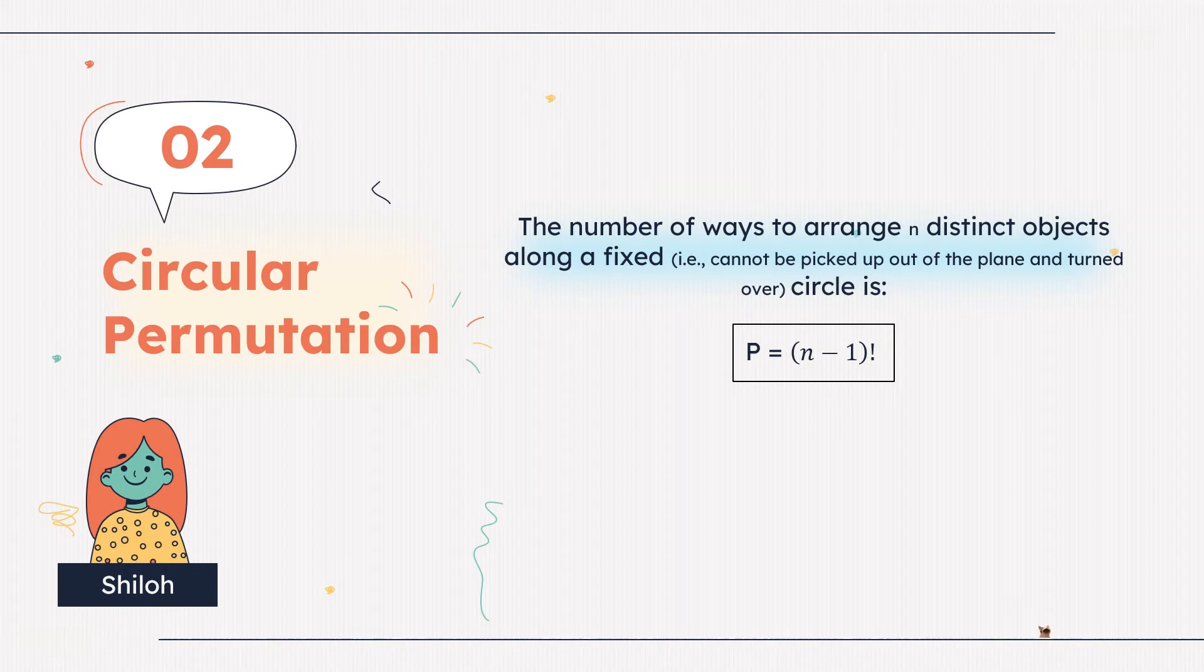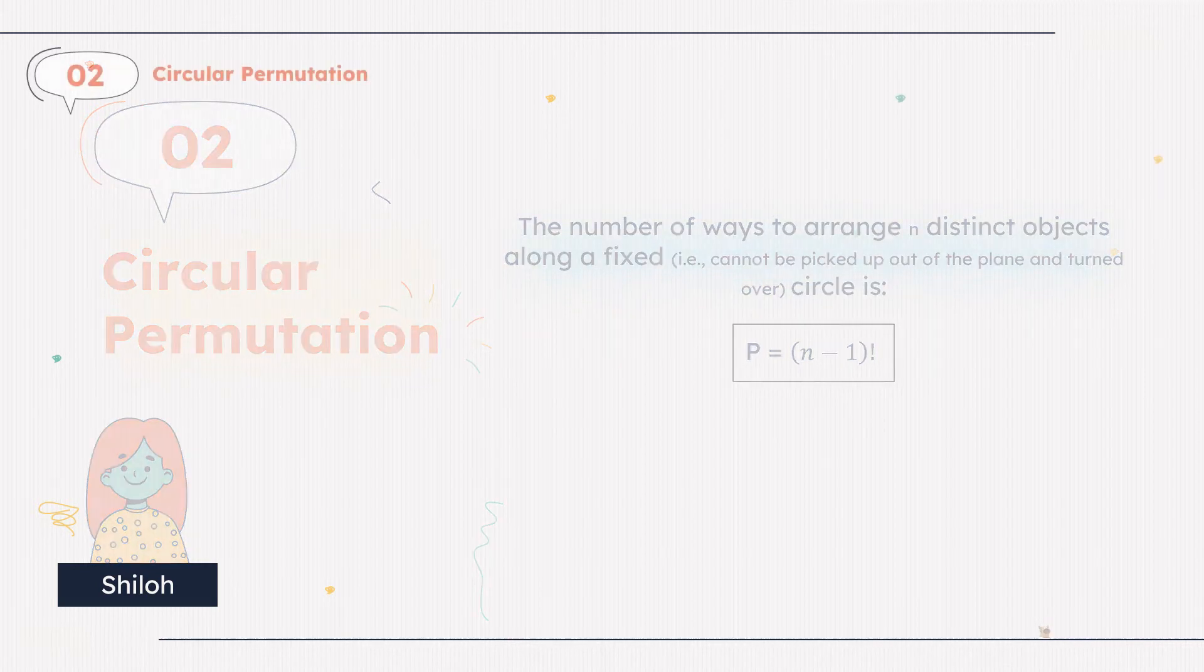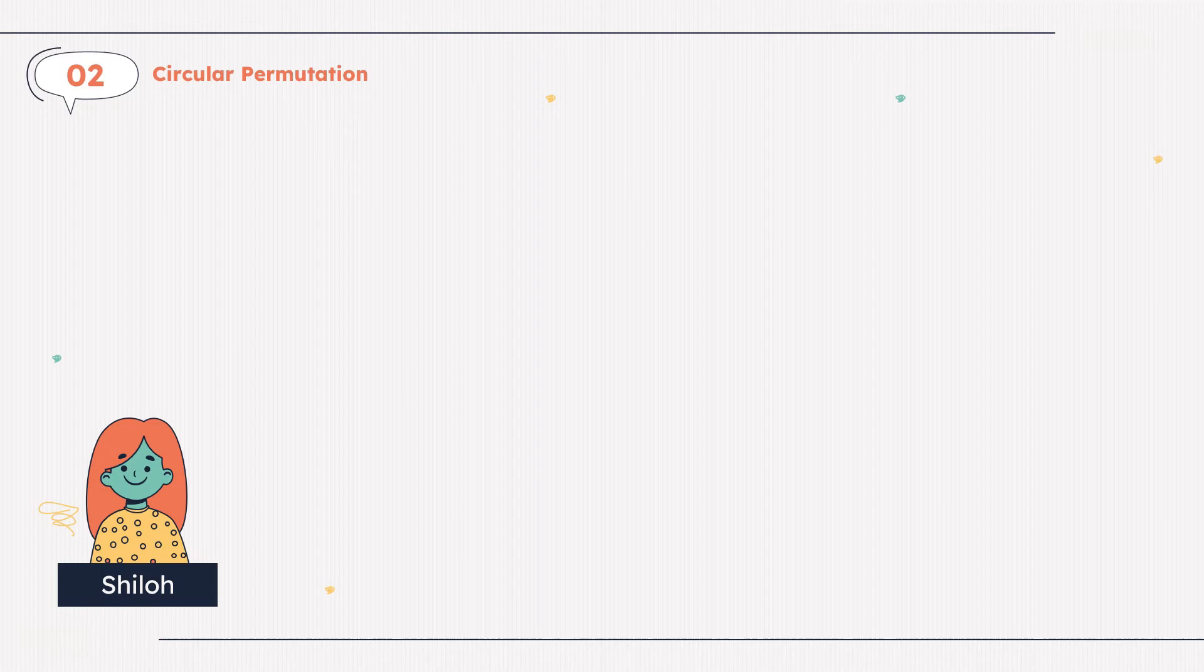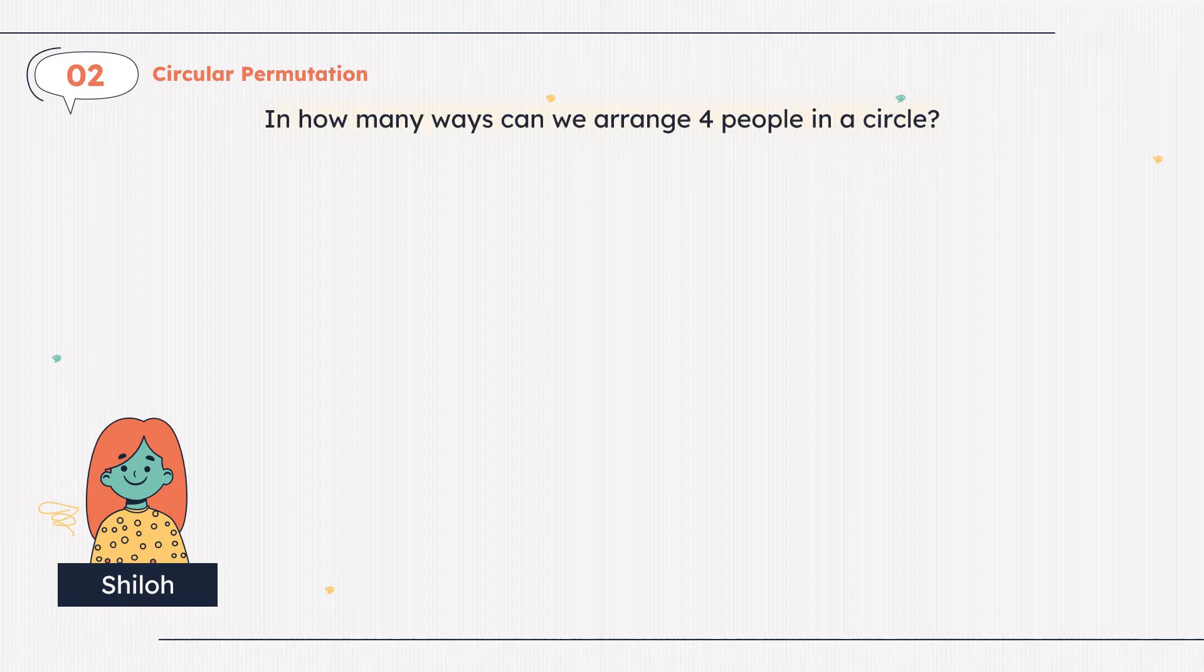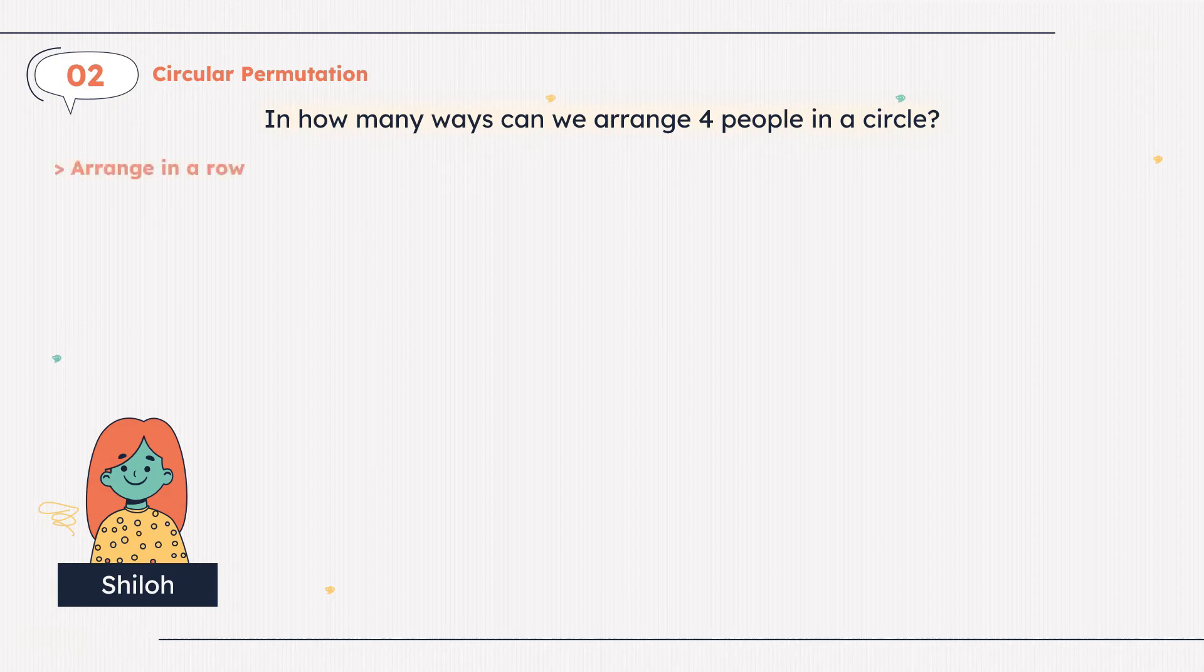Circular permutations. Circular permutations is the number of ways to arrange n distinct objects along a fixed circle. Is p equals the quantity of n minus 1 factorial. In how many ways can we arrange 4 people in a circle? As a reminder, let's arrange them in a row.